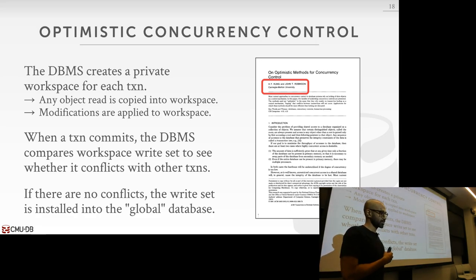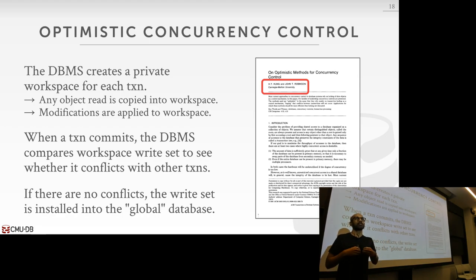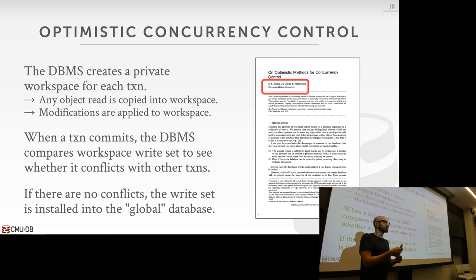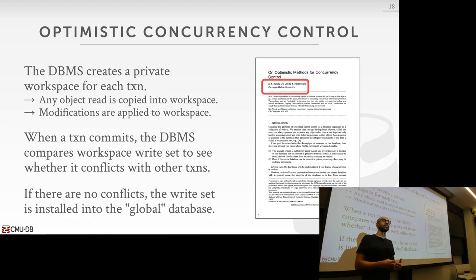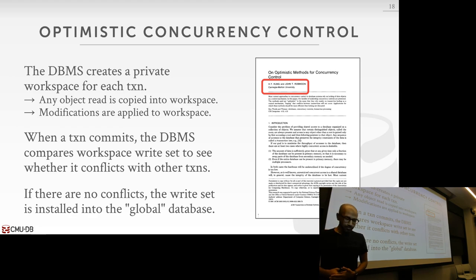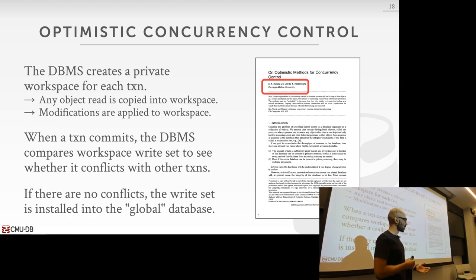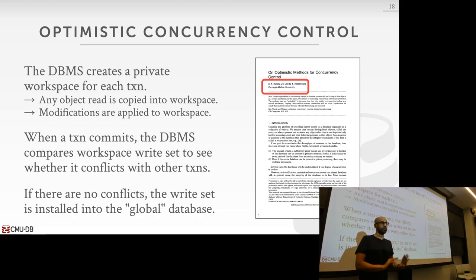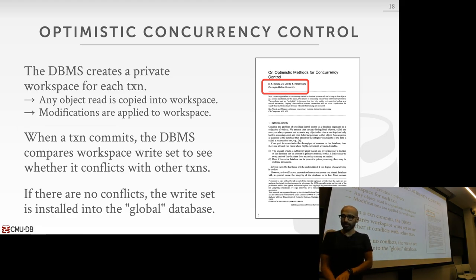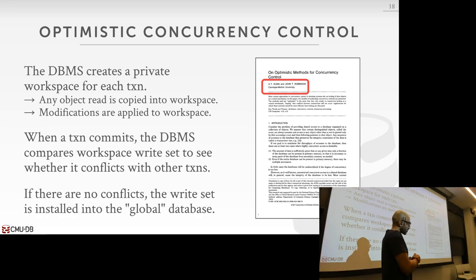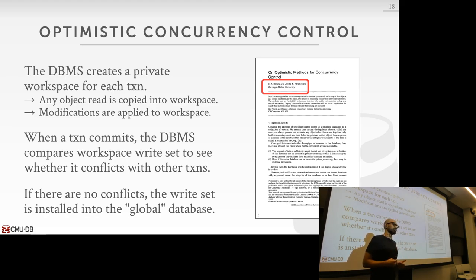The idea: for every operation, you first make a local copy of the data into a thread-local private workspace. Reads copy from the database into your workspace; updates apply to the local copy only — no in-place updates. Once all work is done and you're ready to commit, you validate that your changes are transactionally consistent with all concurrently running transactions. After validation, you atomically install all local changes into the global database.